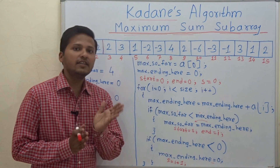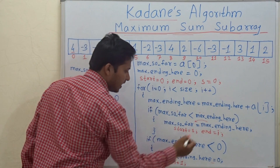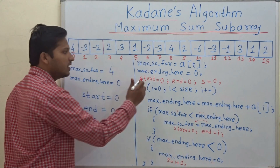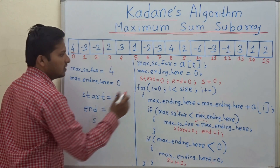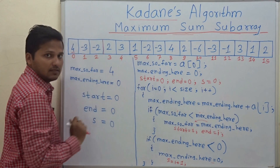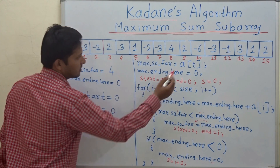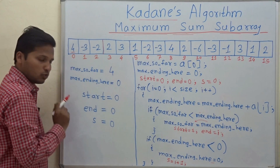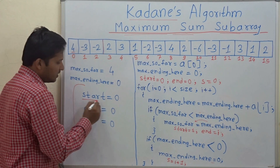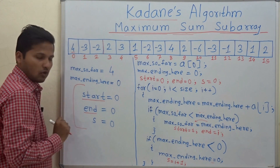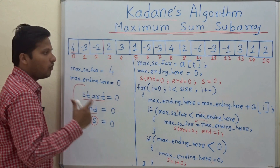Now let's find out the starting index and the ending index of that subarray. These are the extra lines added for finding out the starting index and ending index. So let's solve the example again so you can understand how to find these indices. max_so_far equals a[0] = 4, max_ending_here is initialized to 0, and there are three variables: start, end, and s. start is the starting index of the subarray, end is the ending index, and s is a variable which searches for the starting of the subarray.